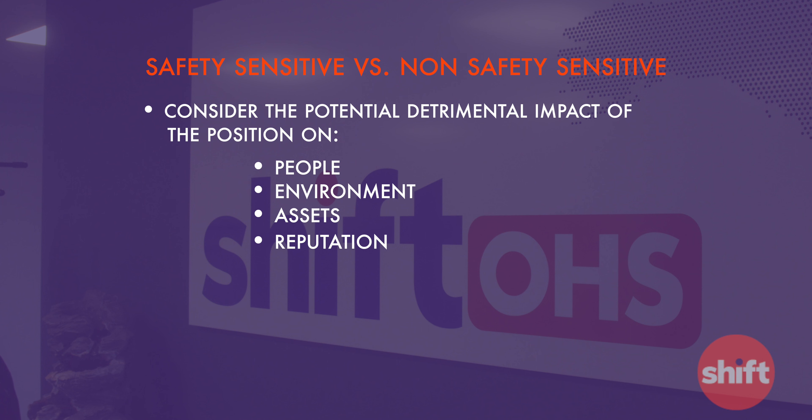You can think of the acronym PAIR to help you remember these important considerations. P is for people, E is for environment, A is for assets, and R is for reputation.